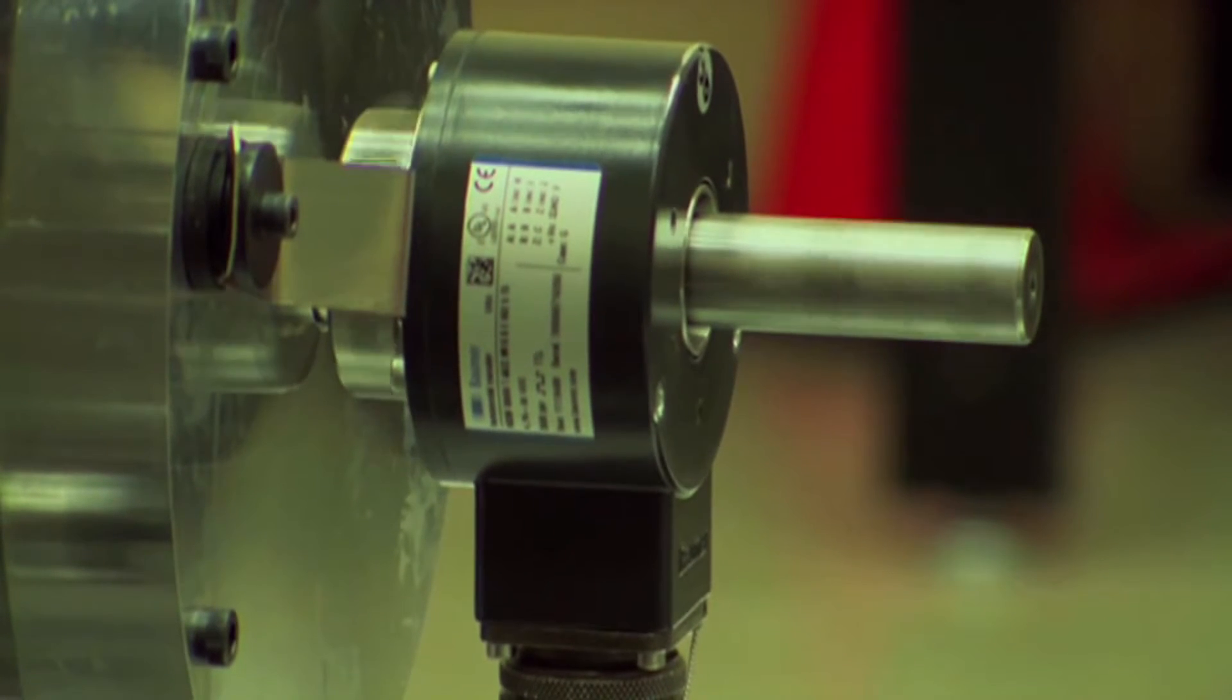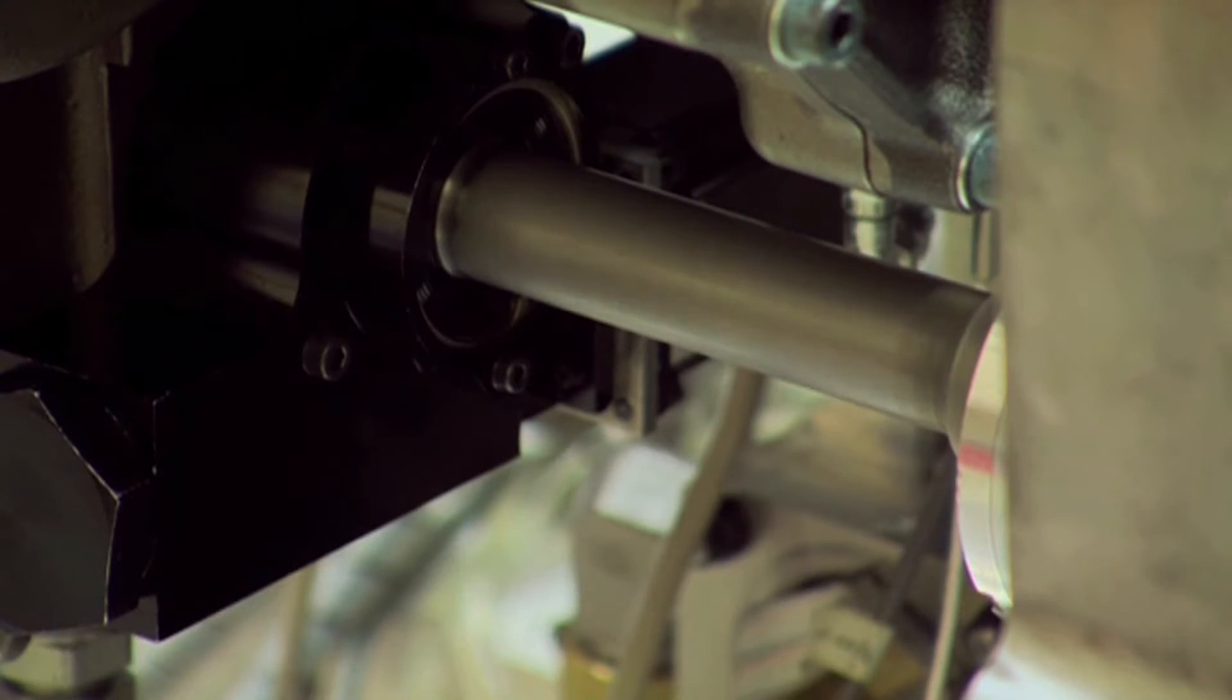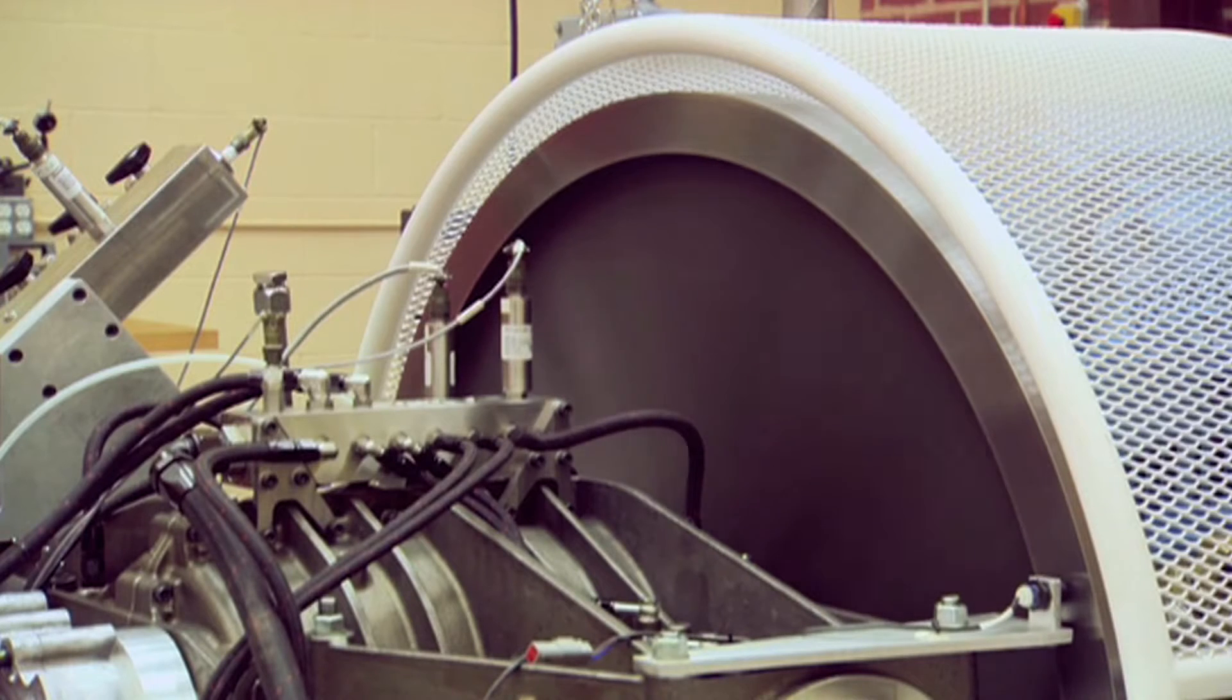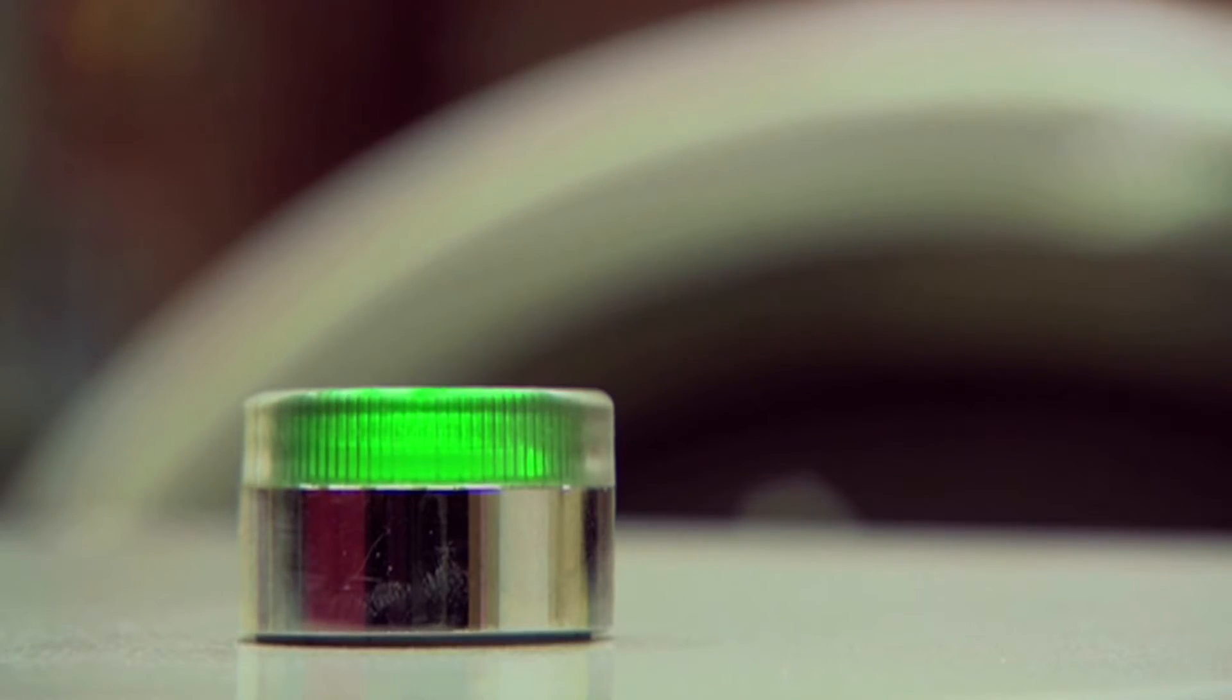It's a simple idea. At times of excess energy supply, the system draws power from the grid and converts it into compressed energy and heat. The water mist cools down the air when it's being stored.